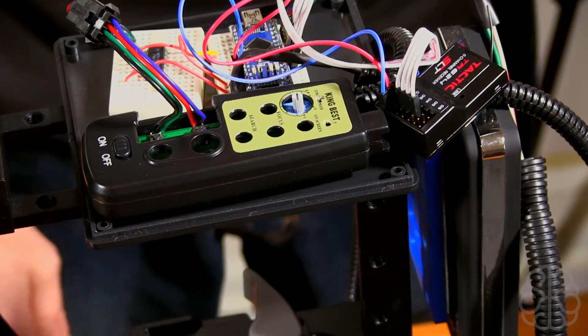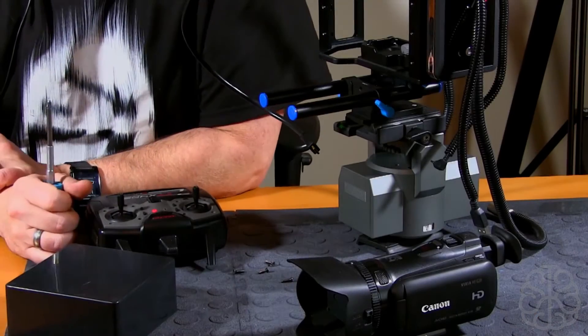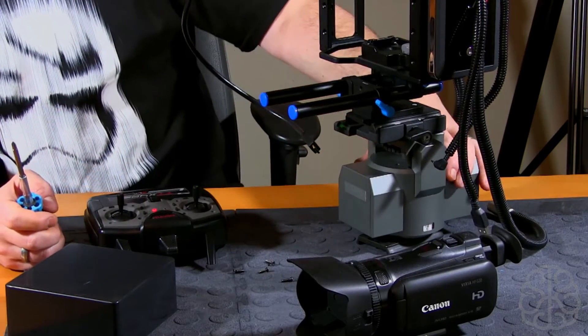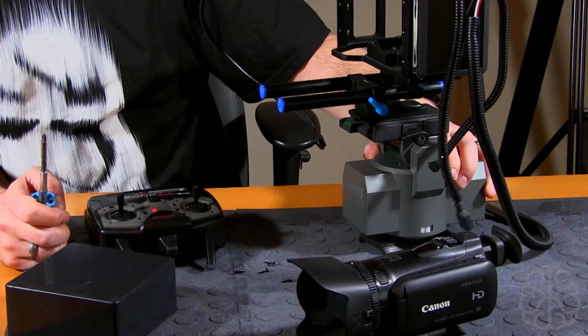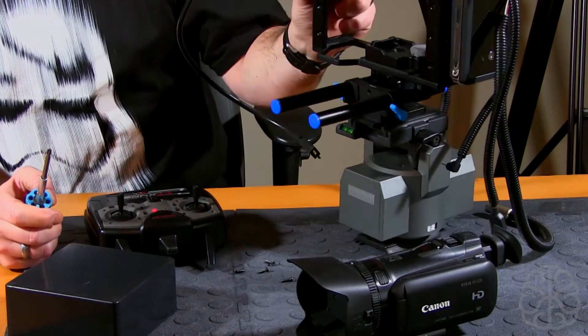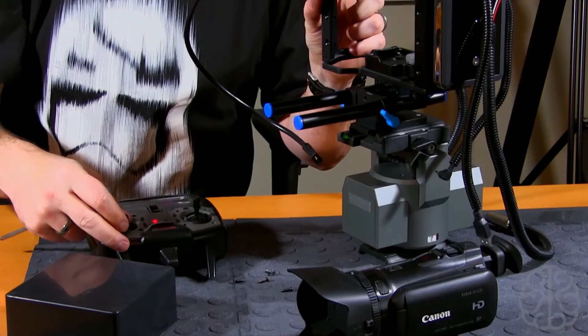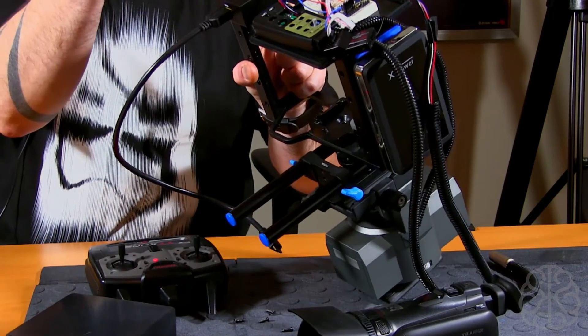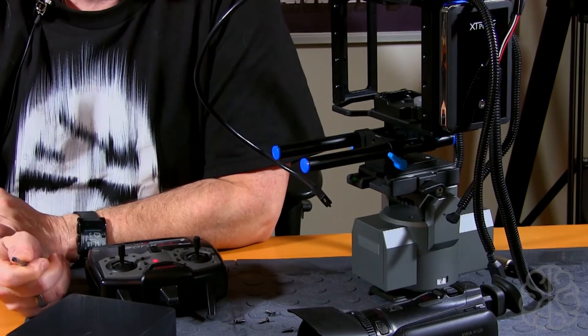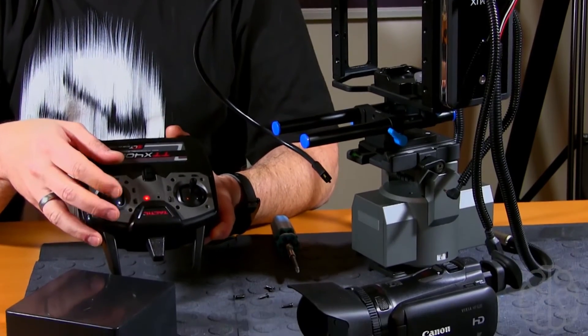That'll do it for this tutorial. Well, I say it wasn't really a tutorial, more an introduction on how I built my pan and tilt systems. If you have any questions, please don't hesitate to ask in the comment section below. In the next tutorial, we're going to look at the actual code that is on the nano.